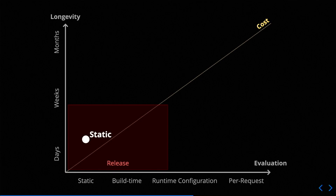We can plot feature toggles on a graph, plotting longevity versus evaluation. Our static toggles land in the bottom corner — they're grouped under a section I call release toggles. You might use something like this for a couple of days while collaborating on some new code. And in terms of evaluation, they land completely in that static area.